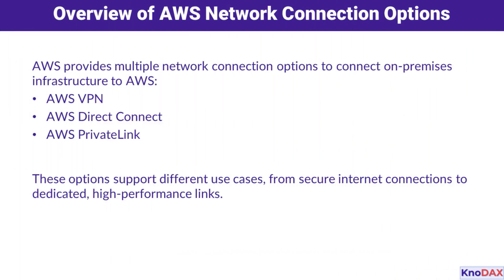Let's start with an overview of the connection options AWS offers to bridge your on-premises infrastructure with AWS. Whether it's secure internet-based connections through AWS VPN, dedicated high-performance links with AWS Direct Connect, or private access to services using AWS PrivateLink, AWS has a solution for every scenario. Each option caters to specific use cases, from distributed networks to latency-sensitive applications.